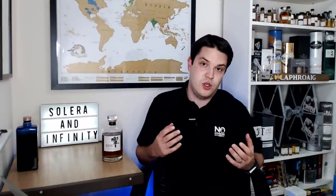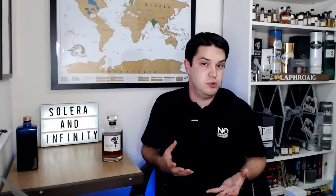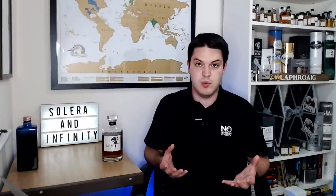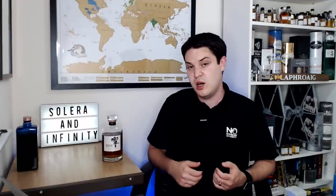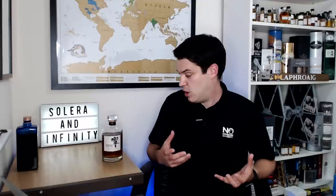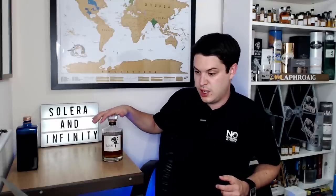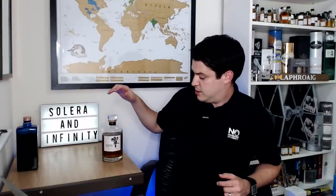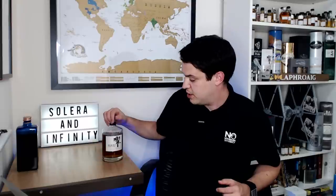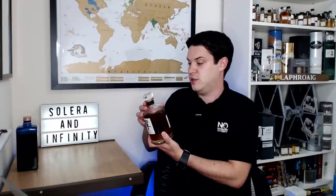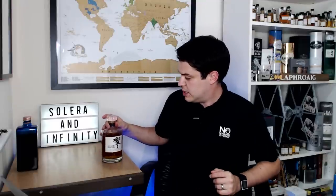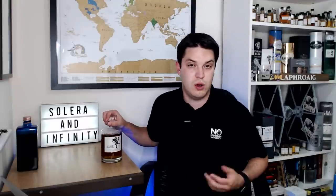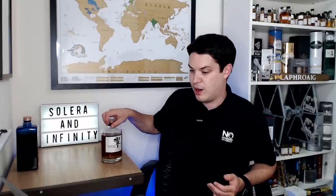First things first, you need to pick a bottle and it can be whatever you want, something that's definitely sealed. I prefer to pick something that I quite like, so for instance I have two here on the table and that is the Hibiki Japanese Harmony bottle because it's a beautiful decanter. The only downside to this is the cork which won't last forever.